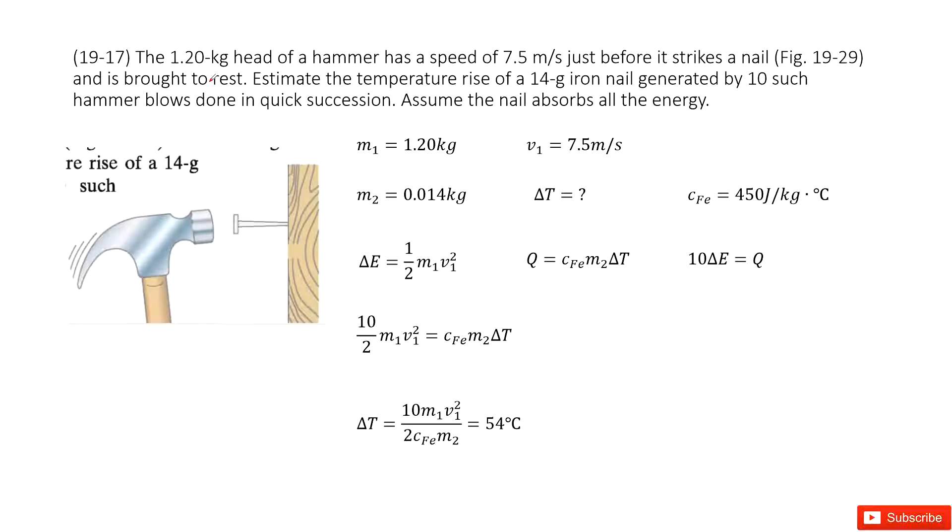And it brought to rest. We need to find the temperature rise of M2, 0.014 kg iron nail generated by 10 such hammer strikes in quick succession.